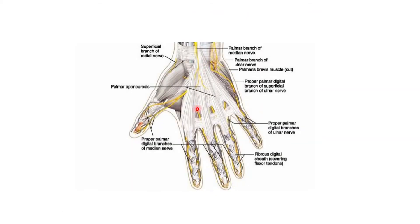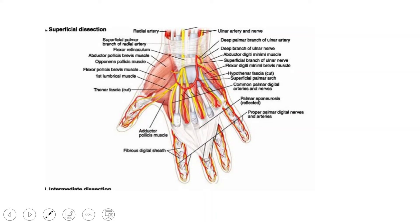This is how the aponeurosis looks once we expose the skin — the apical portion and the distal digital slips, with each slip blending with the fibrous flexor sheath. Once we reflect the palmar aponeurosis from its proximal end, we can see many vessels and nerves deep to it: the palmar branches of the ulnar and radial arteries forming arterial arches, and the digital and palmar branches of the median and ulnar nerves. The aponeurosis thus protects these major vessels and nerves.